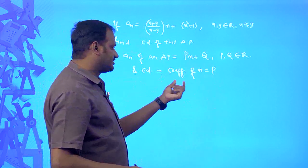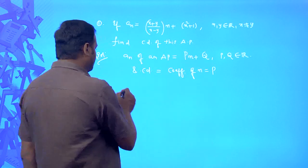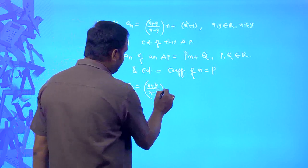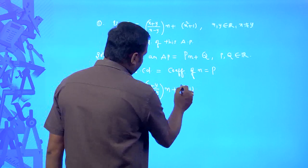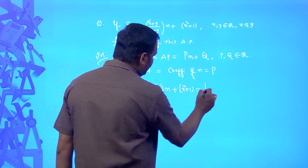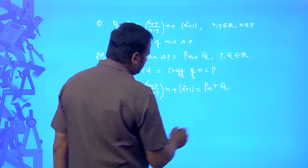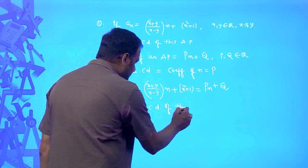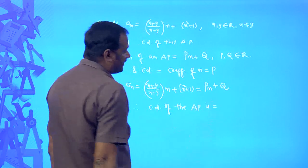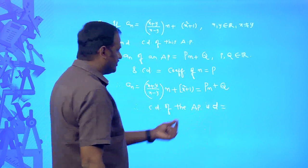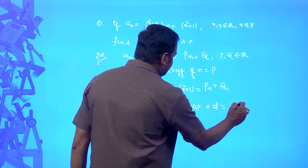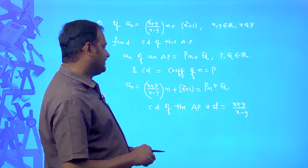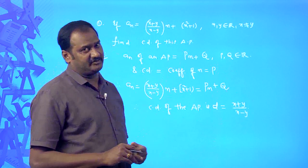So the common difference of this arithmetic progression is equal to the coefficient of n, which is p. In our arithmetic progression, aₙ = (x + y)/(x − y) into n, plus x² + 1. This is in the form of p·n + q. Therefore, the common difference d is equal to the coefficient of n, which is (x + y)/(x − y). This way we can easily find the common difference when the nth term of an arithmetic progression is given.